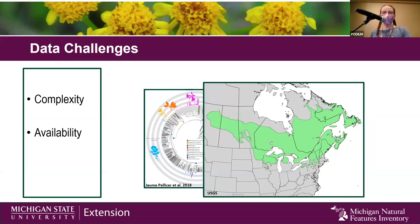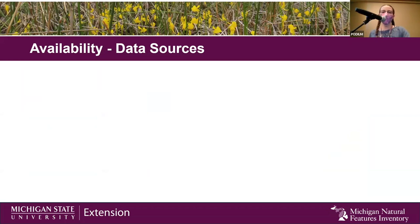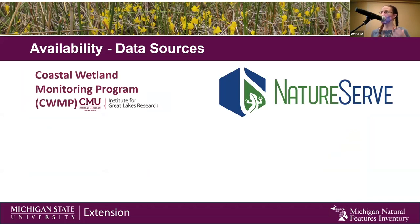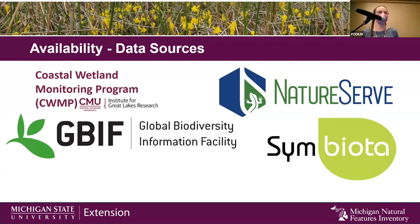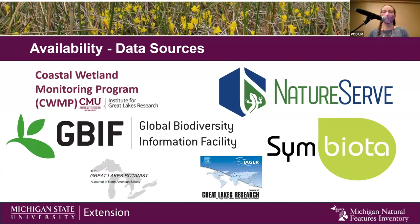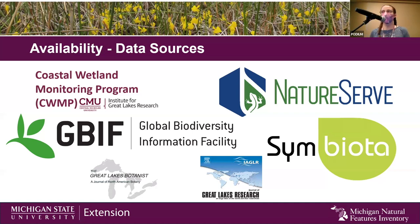So what did we do instead? We had a number of different data sources and we're still working all the way through them. The first were reliable human observations from two long-running datasets: the Coastal Wetland Monitoring Program, which provided all of their vascular plant survey data, and the natural heritage programs through NatureServe, from which we got information on rare plants. The next step was to go through preserved specimens — that's a pretty good record that a plant was found in one of the Great Lakes if we have a physical specimen. So we downloaded biodiversity data from the Global Biodiversity Information Facility (GBIF) and from Symbiota, which is a portal for accessing herbarium specimens. Our final step is going through individual government reports, book chapters, and journal articles that might have created a species list from a particular survey of a particular location in one of the Great Lakes. Two great resources for that have been the Great Lakes Botanist and the Journal of Great Lakes Research.